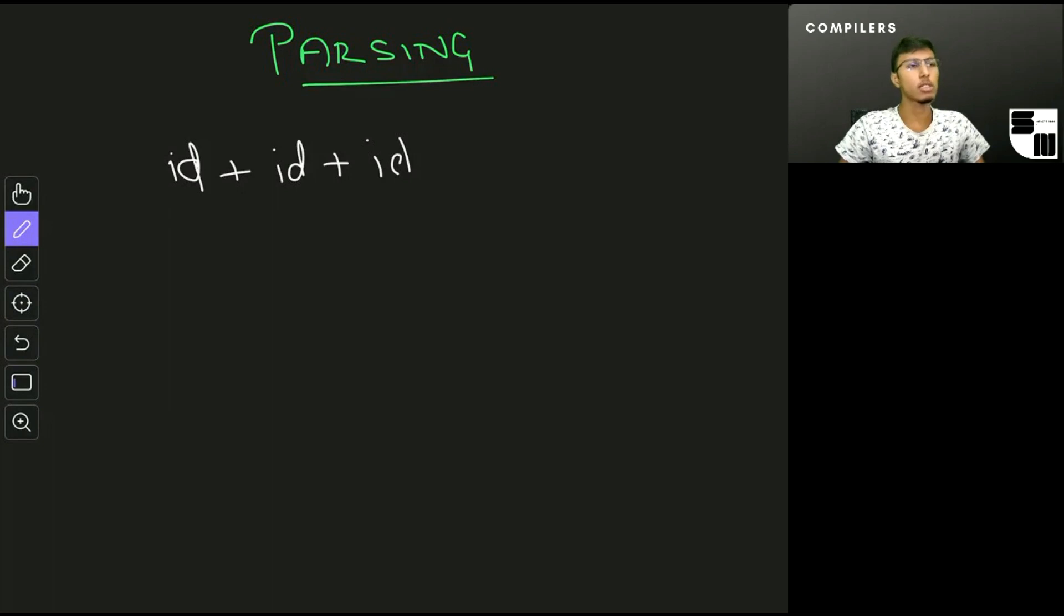Suppose I have the string id plus id plus id. I could have two different parse trees for this. The first one could be E goes to E plus E, followed by the leftmost E going to E plus E, and then changing all of them to identifiers. This is one possible parse tree that I can have.